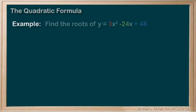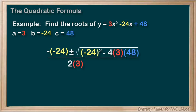Let's do one more example really quick. 3x squared minus 24x plus 48. What are a, b, and c? a is 3, b is negative 24, and c is 48. Let's put them all into the formula.